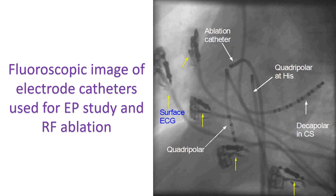Those with recurrent supraventricular tachycardia may need an electrophysiology study using intracardiac electrodes. Once the location of the accessory pathway is found by EP study, it can be ablated by radiofrequency catheter ablation. Some cases of Epstein's anomaly may need surgical management; one important surgery is known as the De Silva's Kohn procedure.